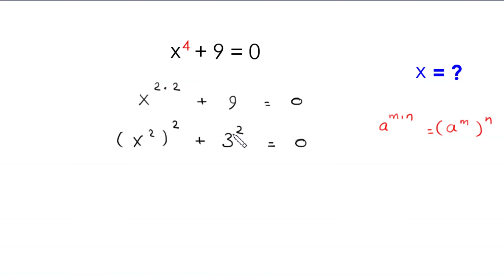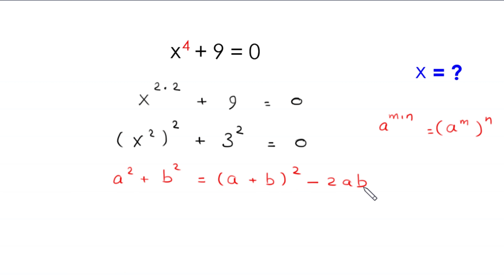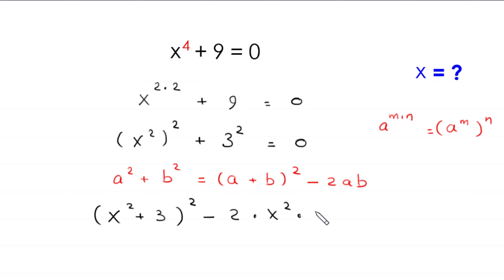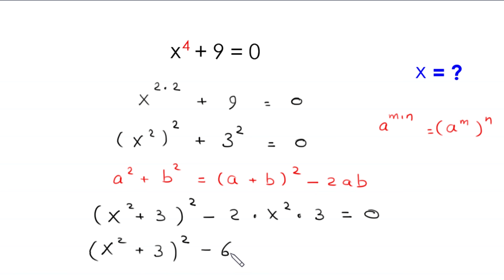Now we have a sum of two squares, so we use the algebraic identity: a squared plus b squared equals a plus b whole squared minus 2ab. This becomes x squared plus 3, whole squared, minus 2 times x squared times 3, equals 0. Simplifying: x squared plus 3, whole squared, minus 6 times x squared equals 0.